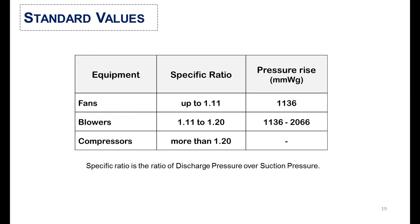Finally, there are standard values comparing fans, blowers, and compressors. The specific ratio — which is the ratio of discharge pressure over suction pressure — should be up to 1.11 for fans, between 1.11 and 1.20 for blowers, and greater than 1.20 for compressors.